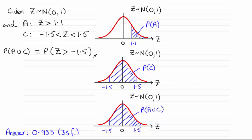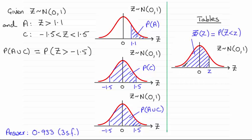And this is very straightforward, because knowing our normal distribution tables give us this area to the left of Z, Z being positive, we can rely on the symmetry of the graph and say that this is exactly the same as working out the probability of Z being less than 1.5.